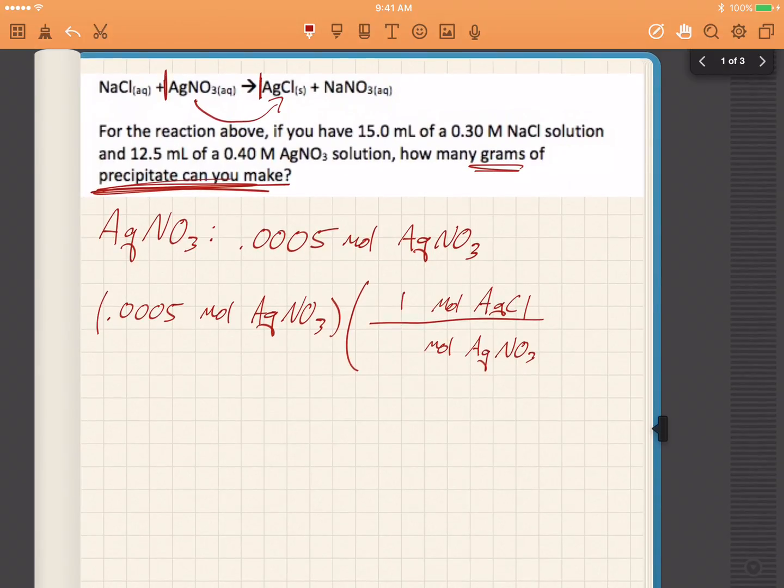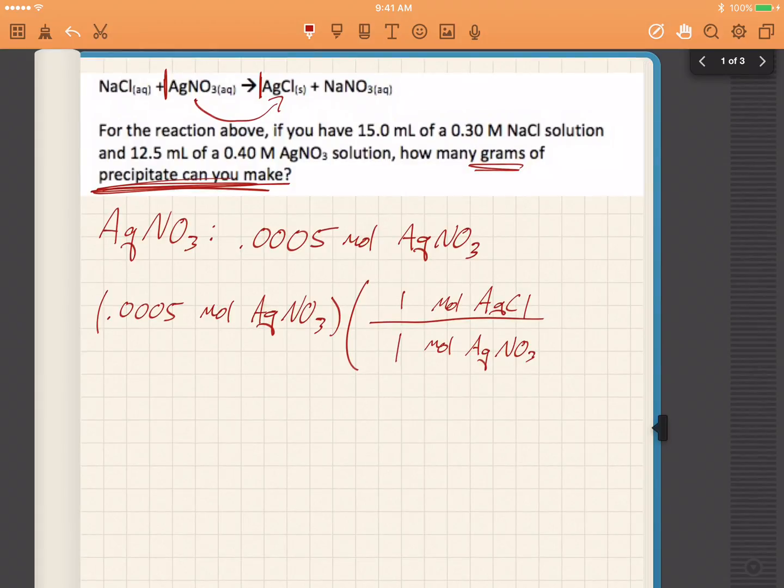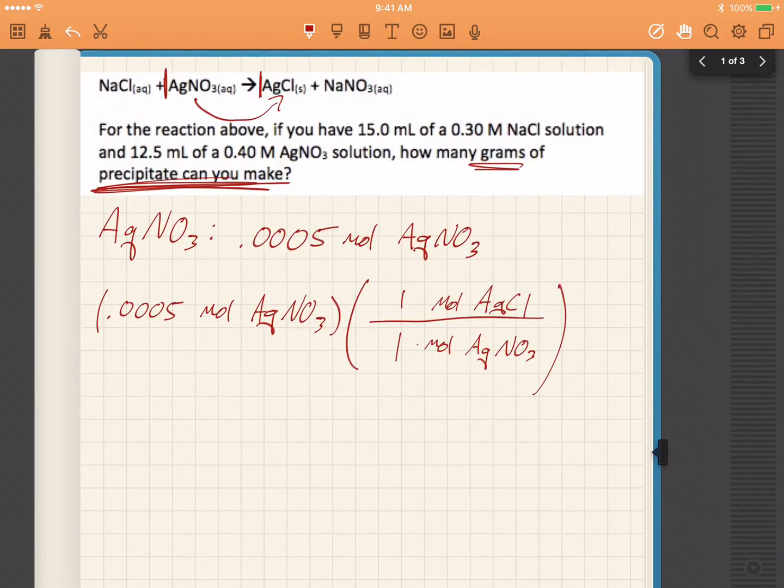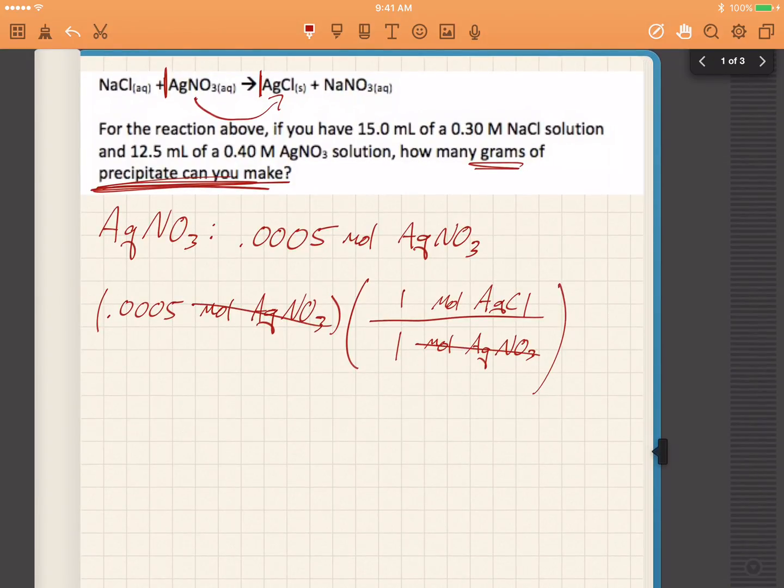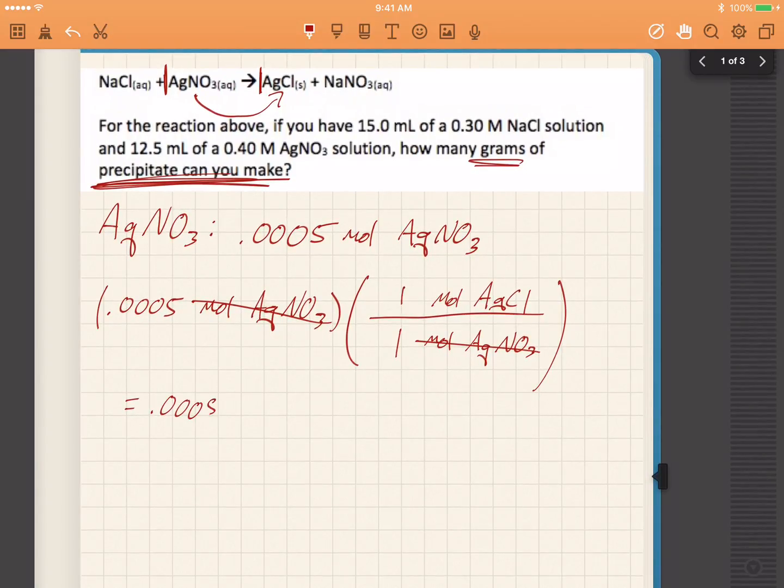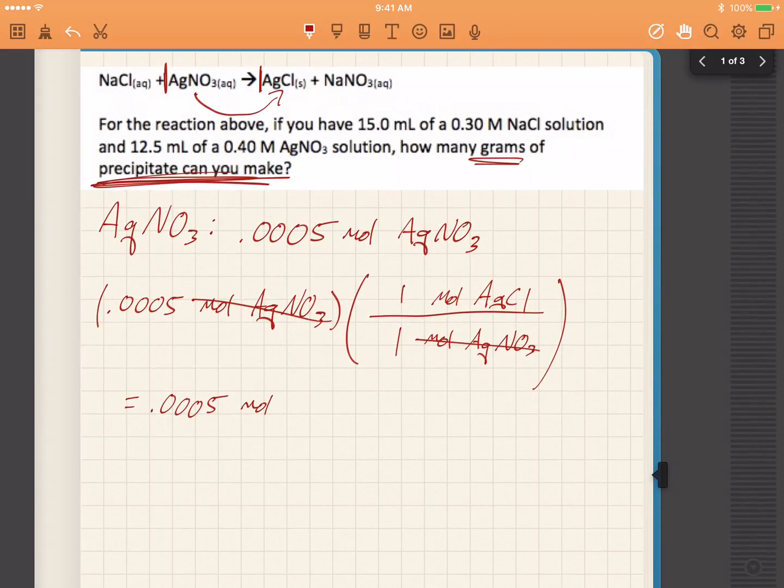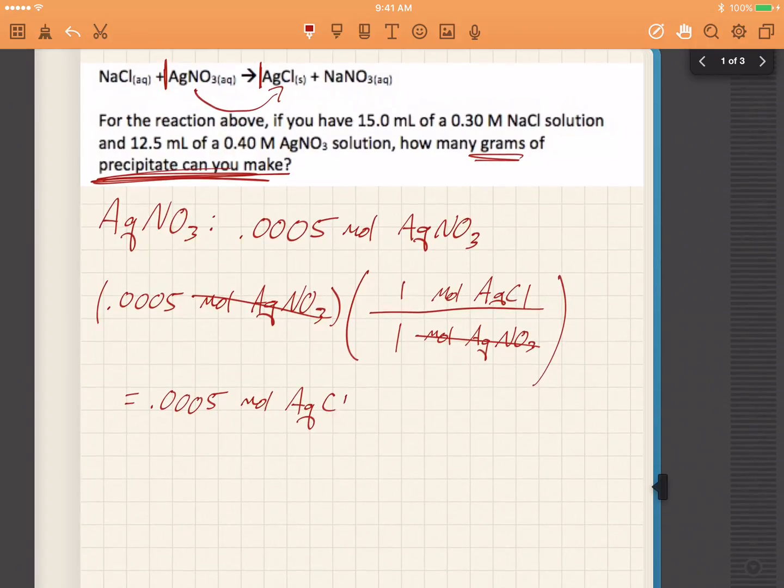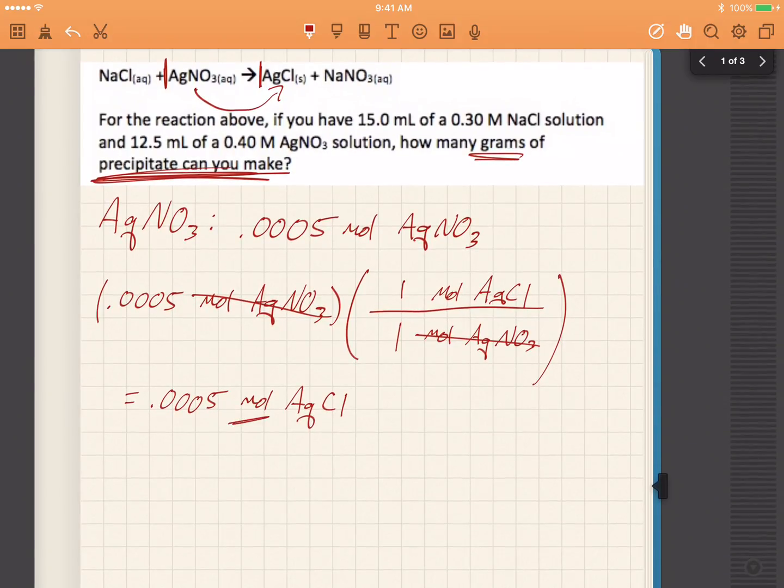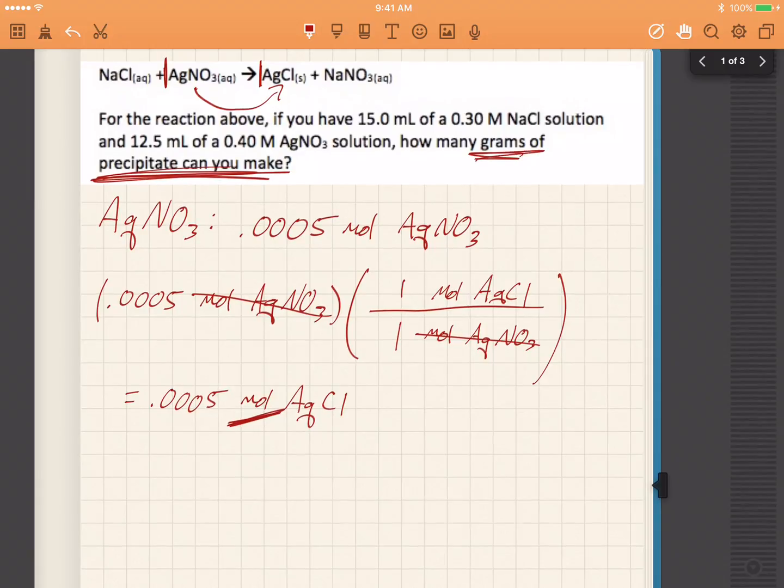For every one mole of AgCl, there is one mole of AgNO₃, and the units cancel. I'm left with 0.0005 moles of AgCl. But we don't want to know how many moles. We want to know how many grams. Those are different questions.